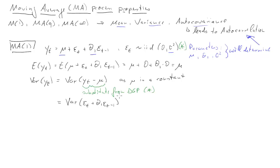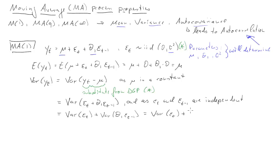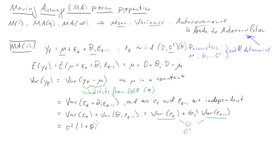Substituting, we have the variance of epsilon_t plus theta_1 times epsilon_{t-1}. Since epsilon_t and epsilon_{t-1} are independent, we can decompose the variance of the sum into the sum of the variances. Bringing theta_1 outside the variance operator gives theta_1 squared. Recognizing that the variance of each epsilon is sigma squared, we get the variance of Y_t equal to sigma squared times (1 + theta_1 squared).